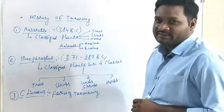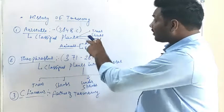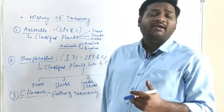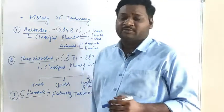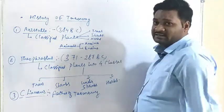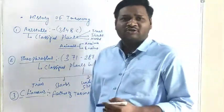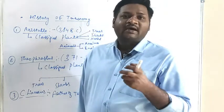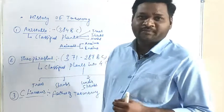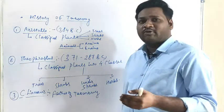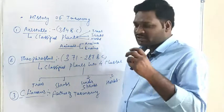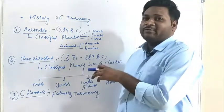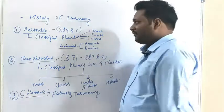Hello students. In early classes we have discussed about the history of taxonomy, that is the historical background of biological classification. As you know, classification is the branch of taxonomy itself. When we define taxonomy, that is the branch of biology that deals with identification, classification and nomenclature. Already you might have studied about nomenclature in the first chapter. But there are certain points related to biological classification.